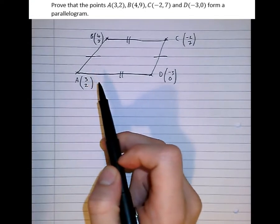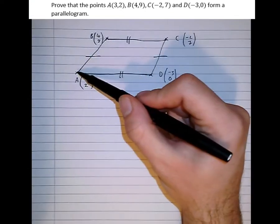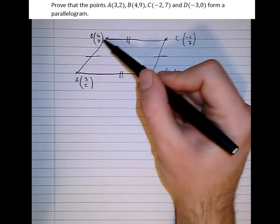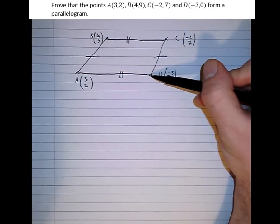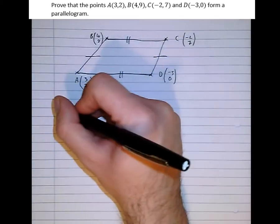So we can prove that this is a parallelogram if we show that the displacement vector AB, to get from A to B, is the same as the displacement vector DC. So let's try and show that.